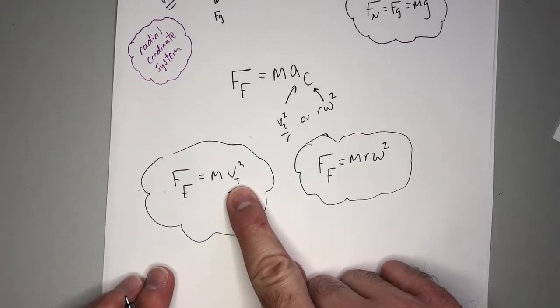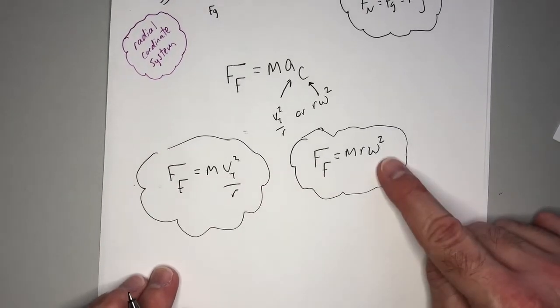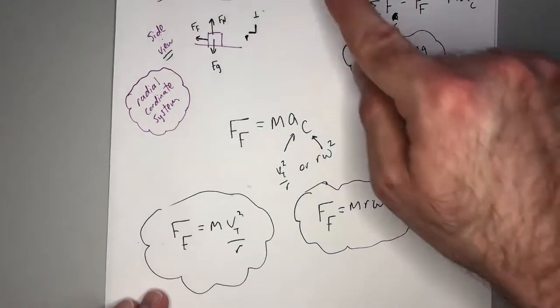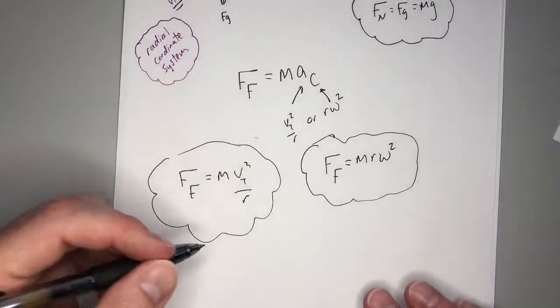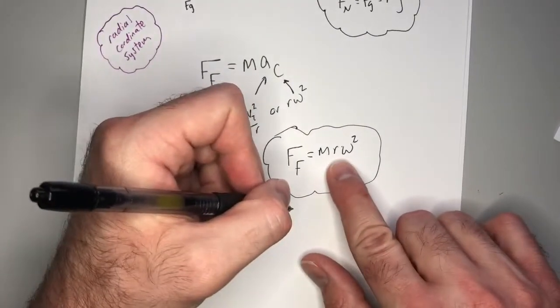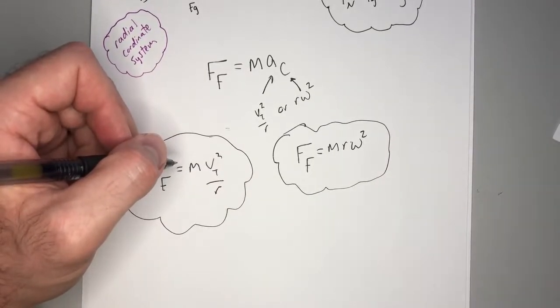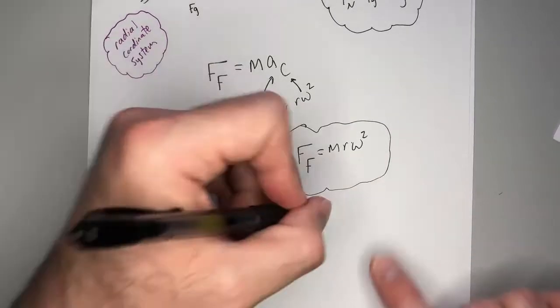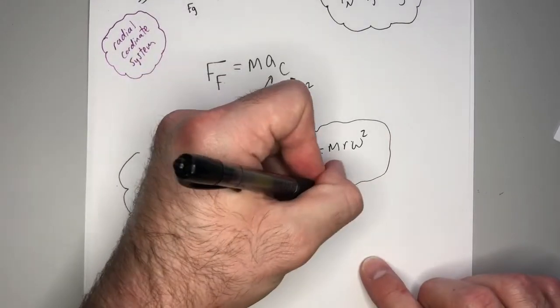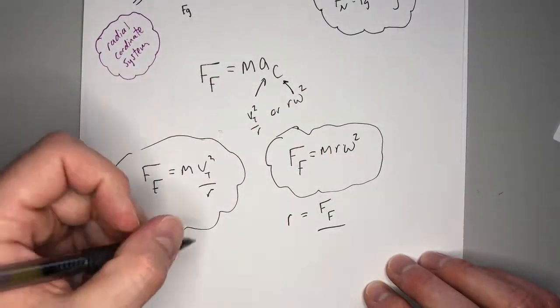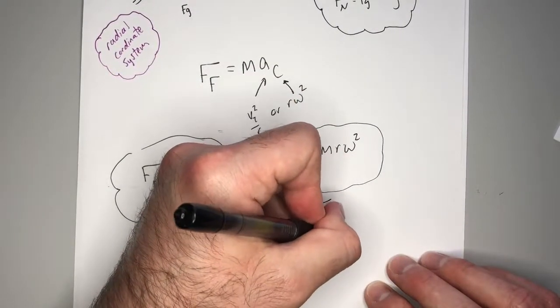So you can do different things. Keep in mind, Vt changes depending where your radius is at, whereas omega is constant. And in this question, they wanted you to solve for the radius. So let's just take this right here. Let's just say they gave you angular velocity. So let's say in the question they gave you how many radians per second you're going. Let's solve this for the radius. So you'd say, R equals the force of friction divided by mass times omega squared.